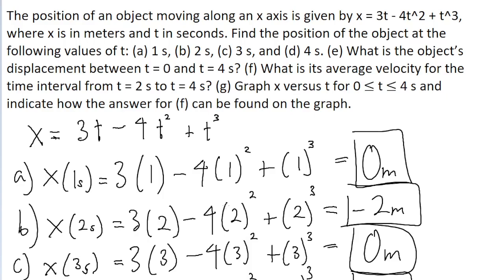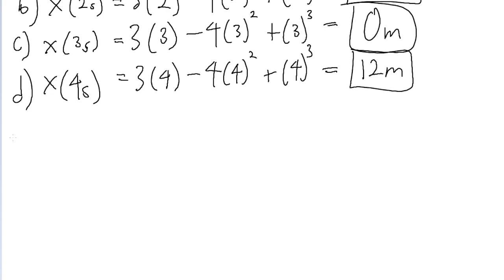Part E of the problem asks us to find the object's displacement between 0 seconds and 4 seconds. Displacement simply refers to a change in position between our starting point and ending point. So this part is just asking for the distance between x at 4 seconds and x at 0 seconds.